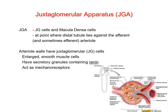The specialized juxtaglomerular apparatus includes the macula densa cells in the wall of the distal convoluted tubule and the juxtaglomerular cells around the afferent arteriole as it enters the capsule to form the glomerulus. The juxtaglomerular cells are enlarged, granule-containing smooth muscle cells — specially differentiated cells whose granules contain a hormone called renin. These cells essentially act as mechanoreceptors, sensing changes in pressure.